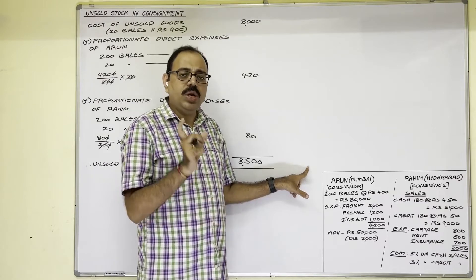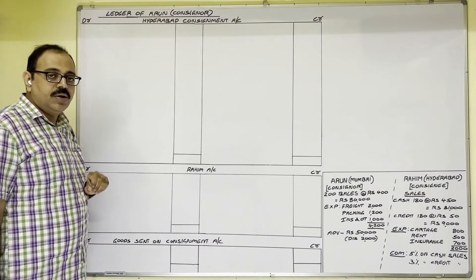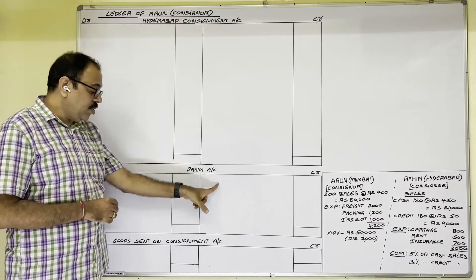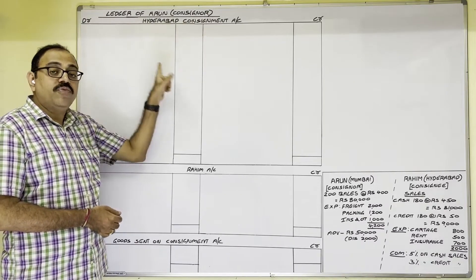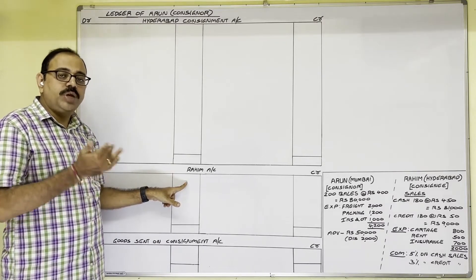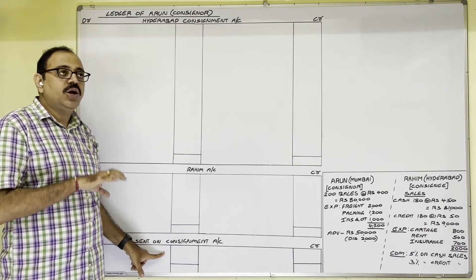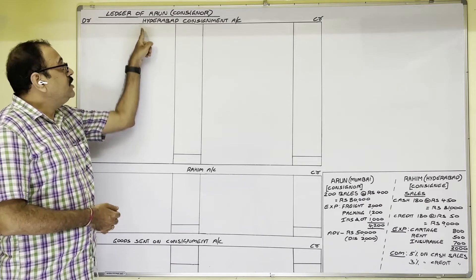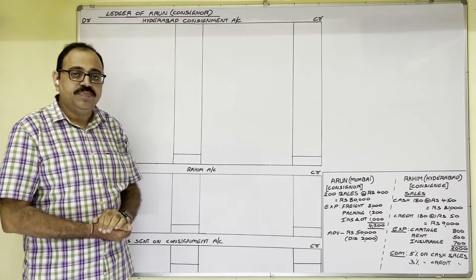In Arun's (consignor's) books, we prepare three accounts: Consignment Account, Consignee's Account (Raheem Account), and Goods Sent on Consignment Account. The Consignment Account is prepared to know the profit or loss in the consignment business. The Consignee's Account is to know the final due amount receivable from the consignee. The Goods Sent on Consignment Account shows details of goods sent on consignment.